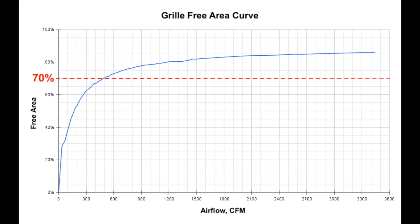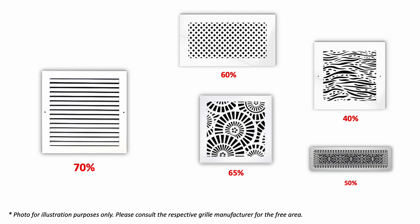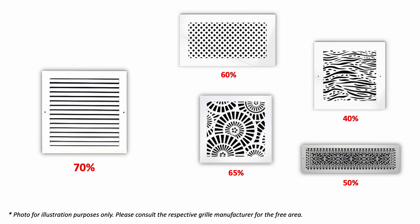However, the free area of the grill drops exponentially for small grills. Take a look at this graph. As you can see, the smaller the grill, the lesser the free area. So, when deciding what free area to use, you must account for the grill size as well as the pattern of the grill. A typical grill may have 70% free area, but if you have a very stylish grill, the free area may drop to 50%, so you need a bigger grill size to account for the smaller free area.